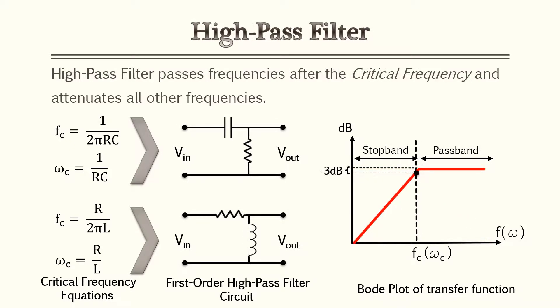The next common filter type is the high pass filter — it's the opposite of the low pass. It passes frequencies after the critical frequency and attenuates all other frequencies. Just like before, you can make this filter with a capacitor-resistor or a resistor and an inductor. The difference between the low pass and the high pass is the circuits look similar but the inductor and resistors are swapped, as are the capacitor and resistors. We have the associated equations, and the Bode plot shows a stop band at low frequencies and a pass at higher frequencies — hence the term high pass filter.